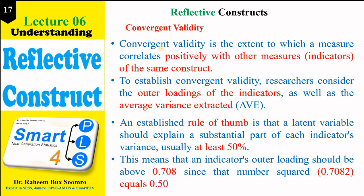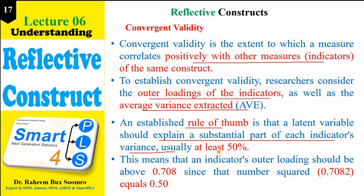Convergent validity is the extent to which a measure correlates positively with other measures of the same indicator. If there is a positive correlation between two indicators of the same construct, convergent validity has been established. To establish convergent validity, we check the outer loadings of each indicator as well as the AVE of each construct. The rule of thumb is that the latent variable should explain at least 50% of each indicator's variance, meaning outer loadings should be above 0.708.